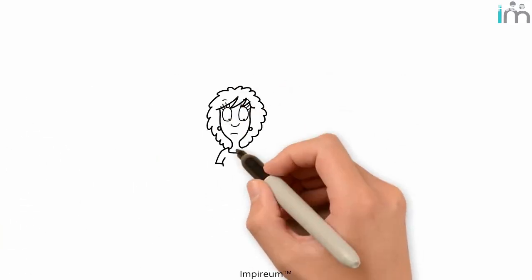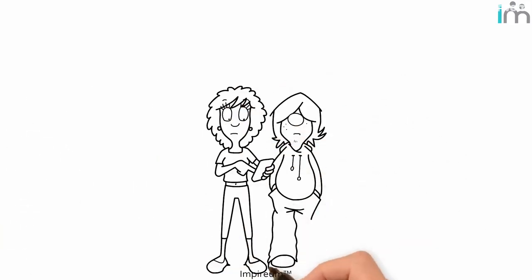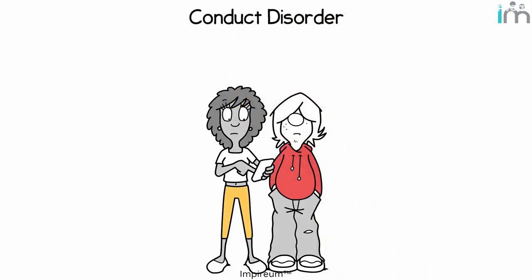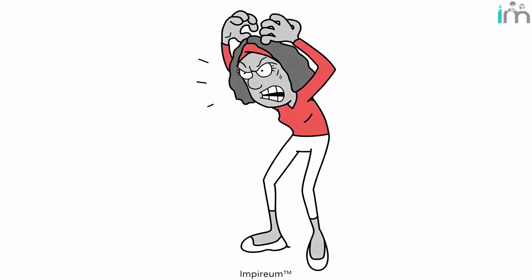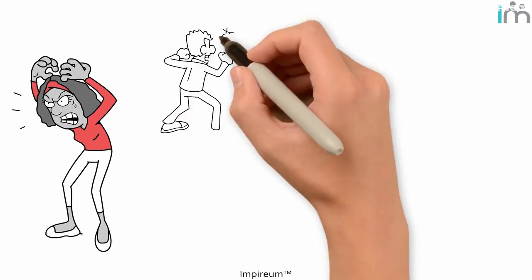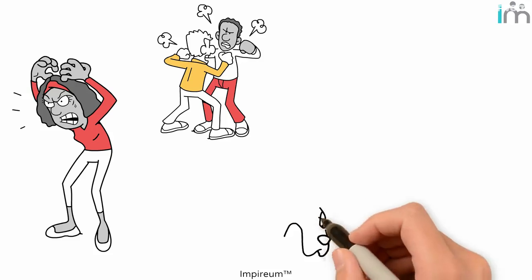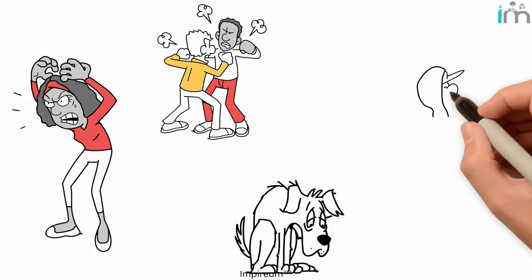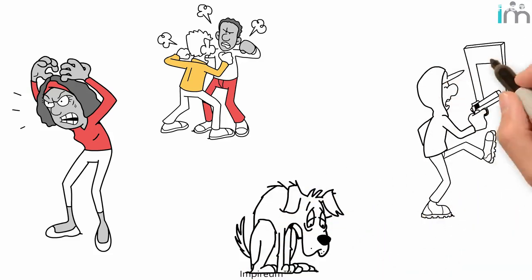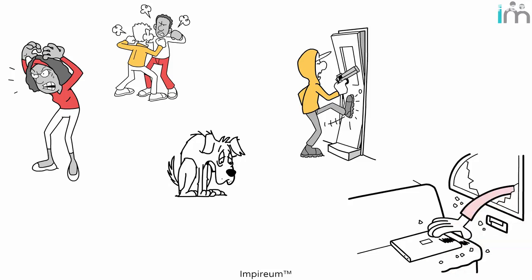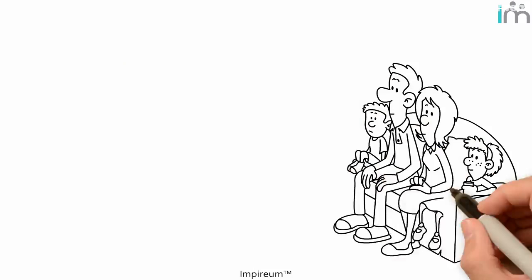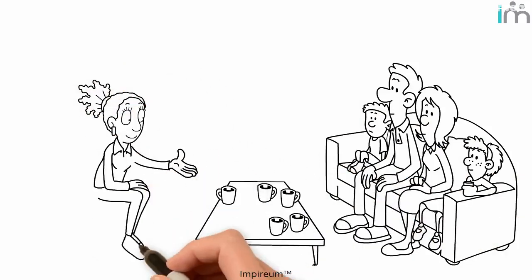A related disorder that applies to minors up to age 18 is called conduct disorder, which is actually even more serious than ODD. Now the person is getting aggressive about their acting out. They might get into fights, try to bully or hurt other people, engage in animal cruelty, carry around weapons, damage property, or run away. They're also prone to stealing, lying, and trying to cover up their actions. Conduct disorders are best treated with early intervention and family therapy strategies.